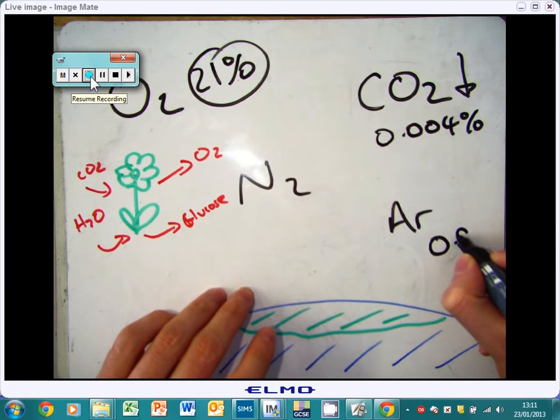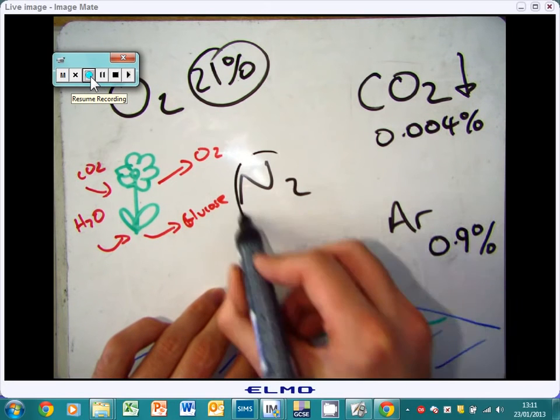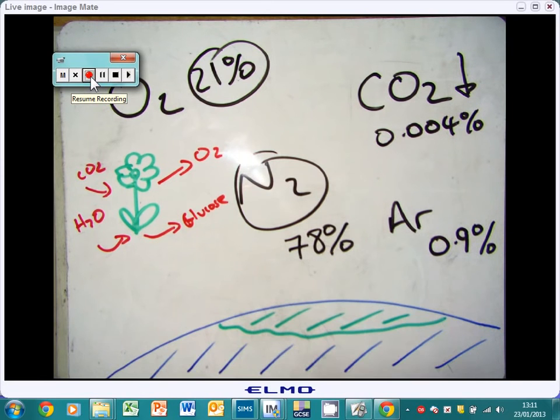Argon is 0.9%. And then the remaining one, which is the huge one, is nitrogen, which is 78%.